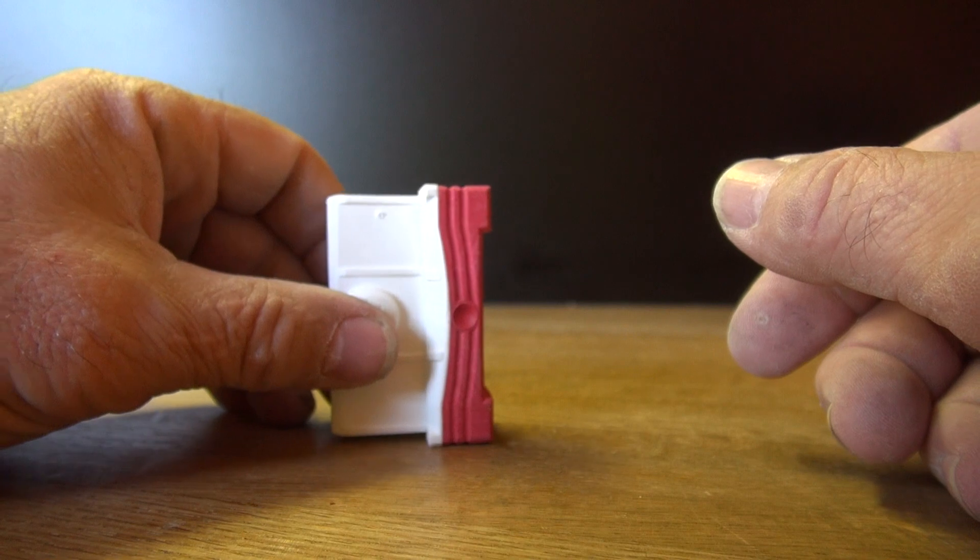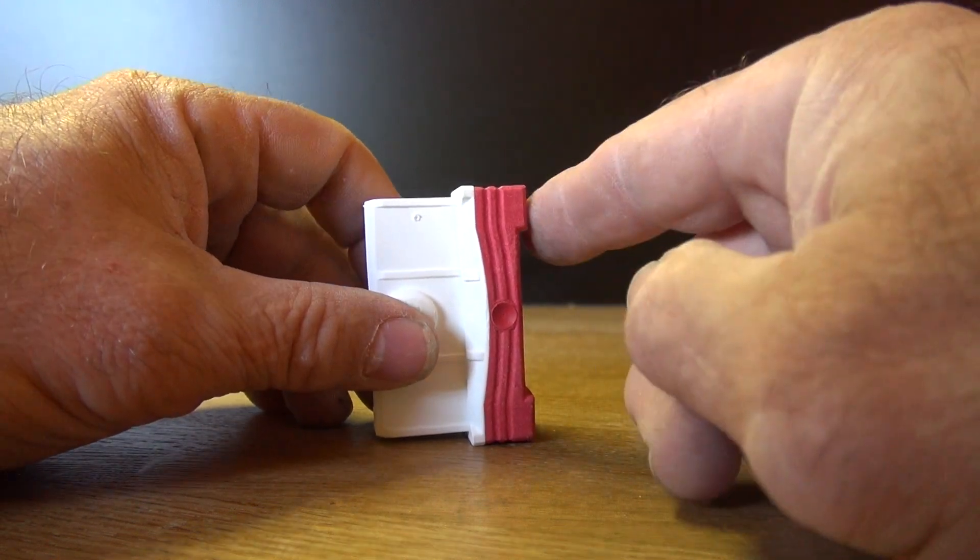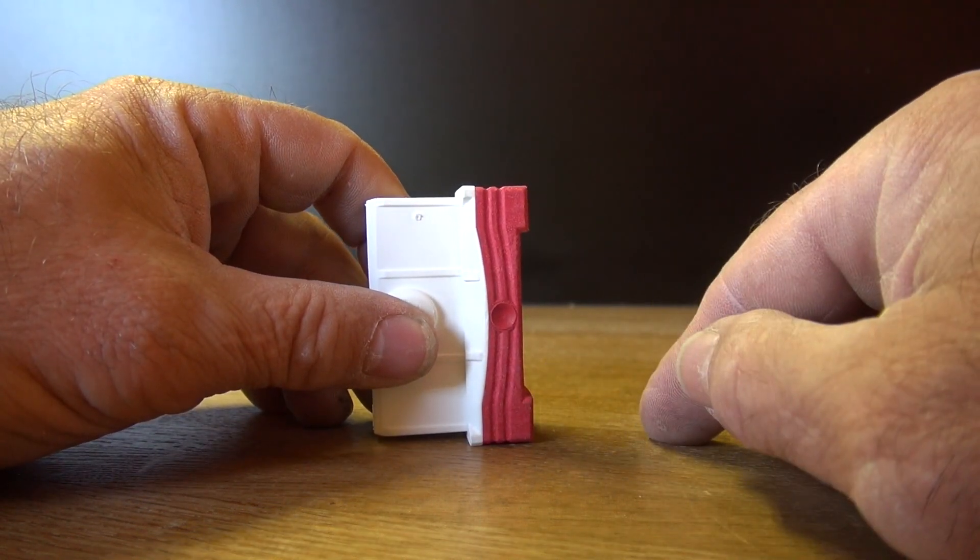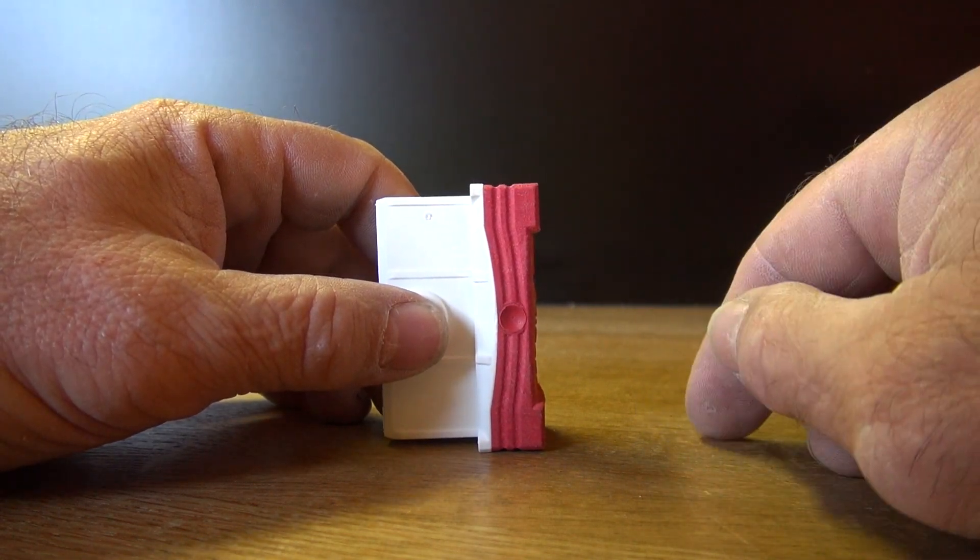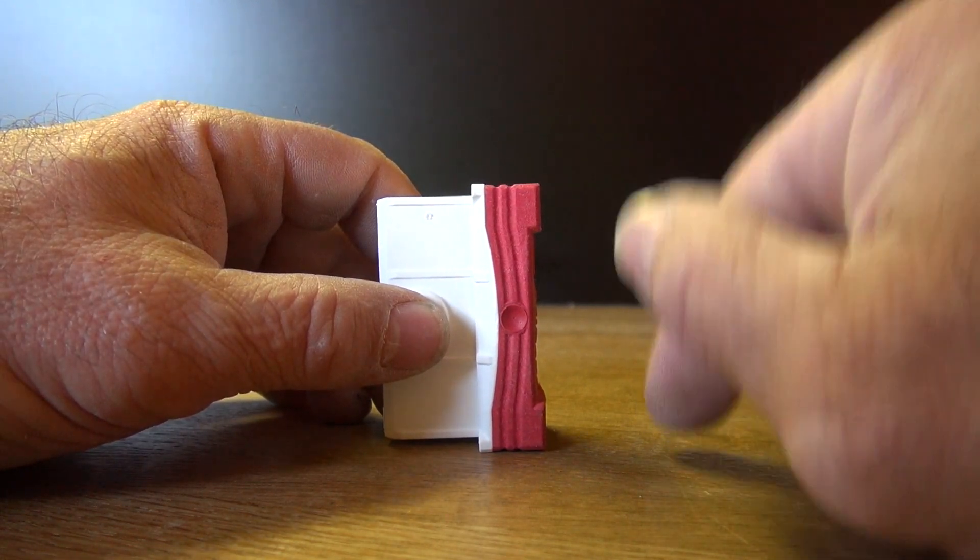Now two models where that comes in handy: our Stabila 96 new style end cap. You see it's got these little bosses top and bottom. Again, with this end cap attached to the level, perform the same little flattening operation. You'll end up with this good surface, you're good to go.